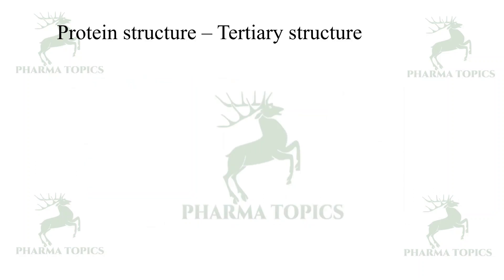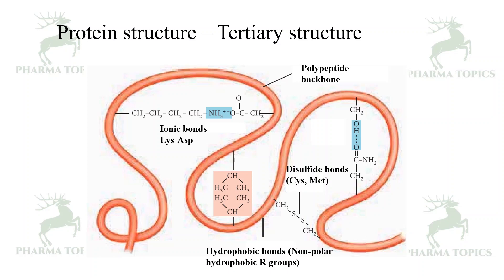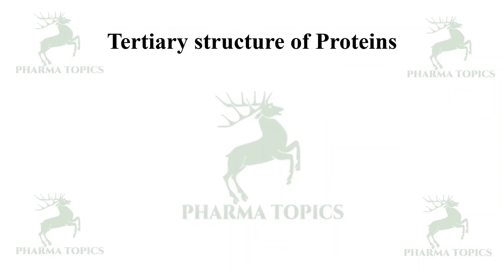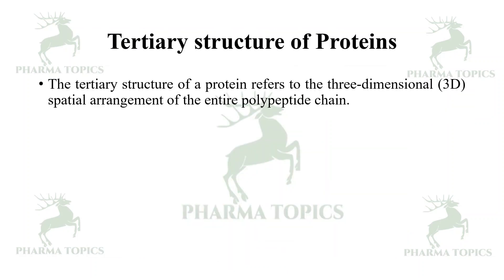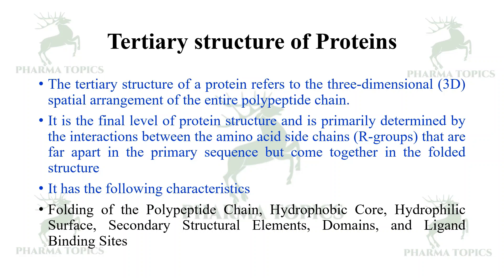The tertiary structure of a protein is the three-dimensional spatial arrangement of the entire polypeptide chain. It is held together by ionic bonds (lysine and aspartate are responsible), disulfide bonds from sulfur-containing amino acids, hydrophobic bonds from non-polar amino acids, and polar R-group hydrogen bonds and van der Waals interactions. Tertiary structure is primarily determined by interactions between R-groups far apart in the primary sequence that come together upon folding. Key characteristics include a hydrophobic core, hydrophilic surface, secondary structural elements, domains, and ligand binding sites.